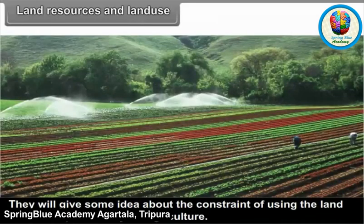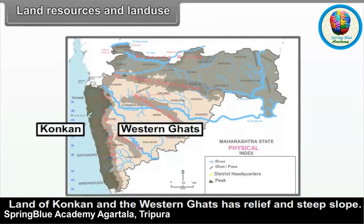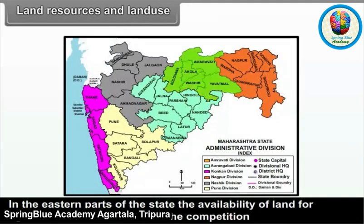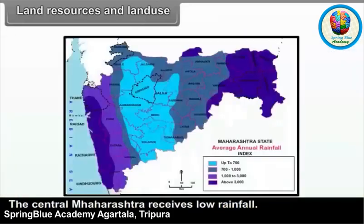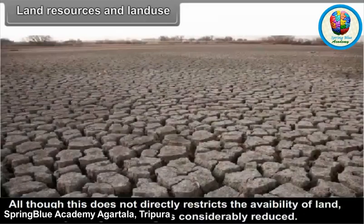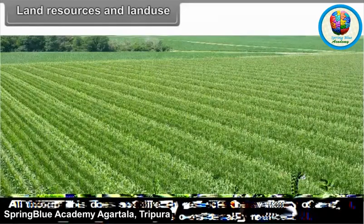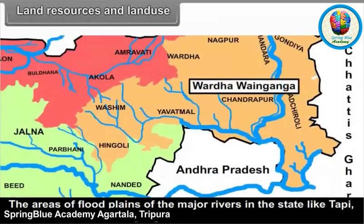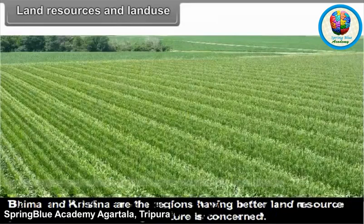These maps will give some idea about the constraints of using the land resource, particularly for agriculture. Land of Konkan and the Western Ghats has high relief and steep slope, which limits the availability of land for agriculture. In the eastern parts of the state, availability of land for agriculture is less because of competition with other uses such as forest and mining activity. Central Maharashtra receives low rainfall, which considerably reduces its usability for agriculture. The areas of floodplains of major rivers like Tapi, Godavari, Wardha, Ganga, Bhima and Krishna have better land resource potentials for agriculture.